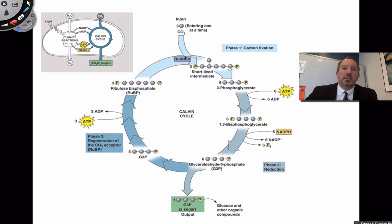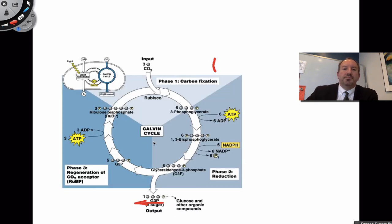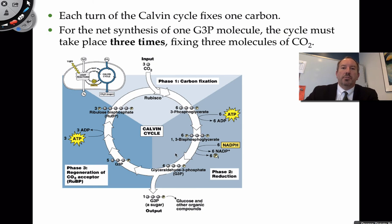Looking at another summary of the cycle: CO2 comes in, rubisco grabs it and fixes it to the short-lived six-carbon intermediate, producing six three-carbon phosphoglycerate molecules. ATP and NADPH from the light reaction are used in the reduction phase to produce six GAP molecules. One GAP exits, the other five regenerate the RuBP. Each turn of the Calvin cycle truly fixes one carbon at a time, so the cycle needs to go around six times — or you can say it goes around twice if looking at a triad of three CO2s.